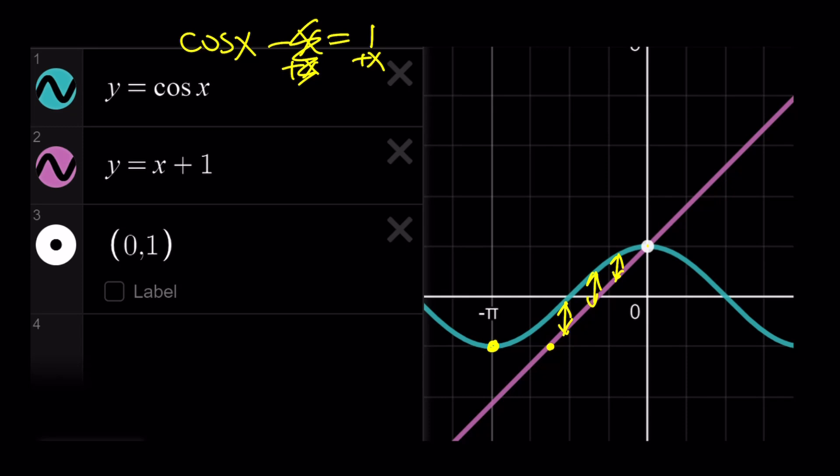Because what happens is, this function, the linear function, is going to be going down, as the other graph is going down, but it's going to curve, so it's going to get a little farther, and then it's going to get a little closer, but they will never intersect again. Therefore, x equals 0 is the only solution to this equation.